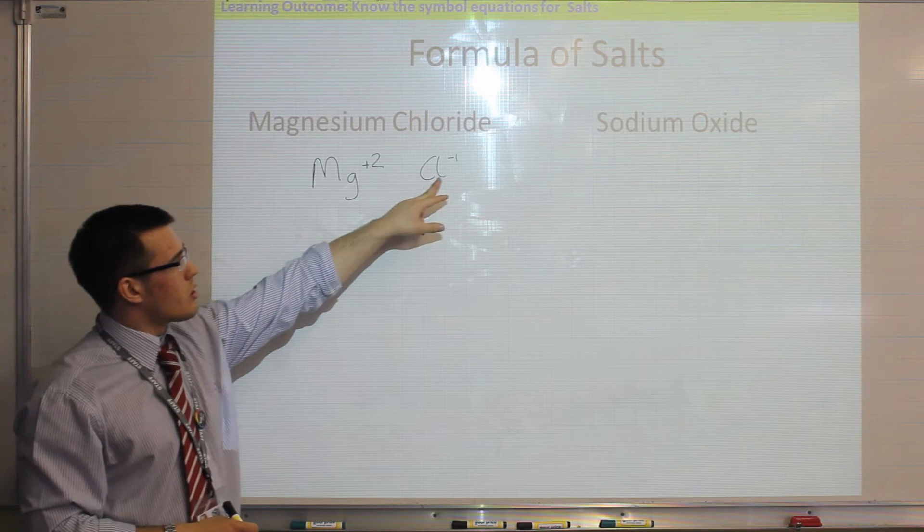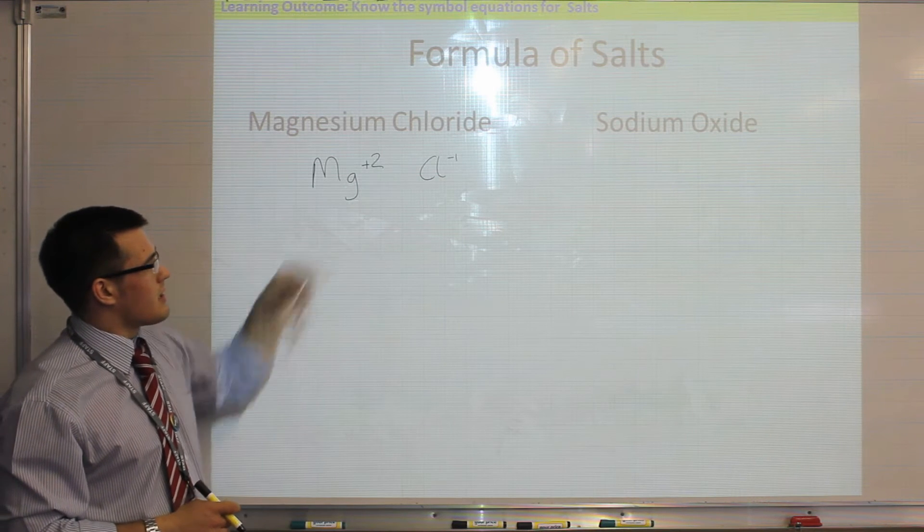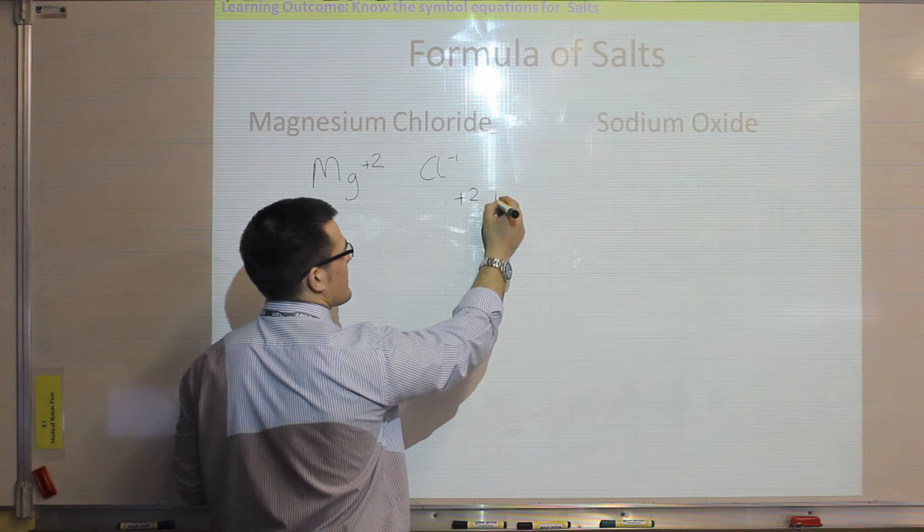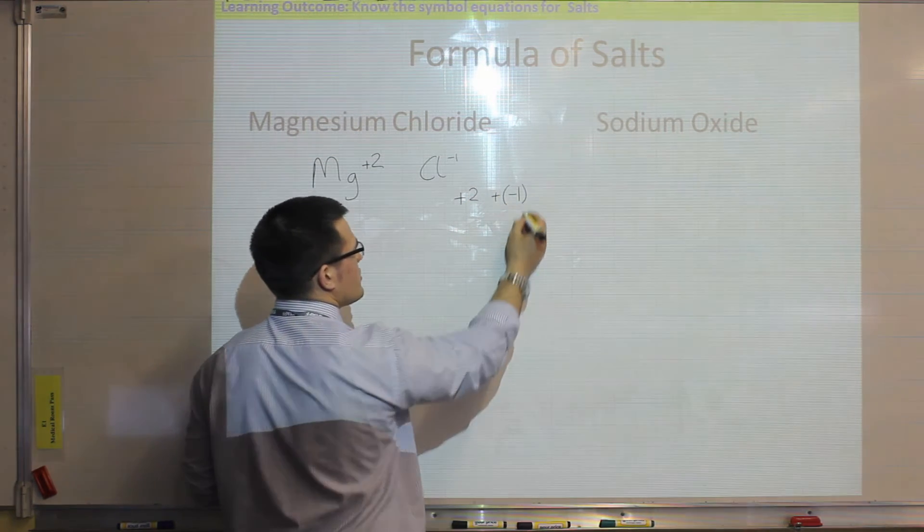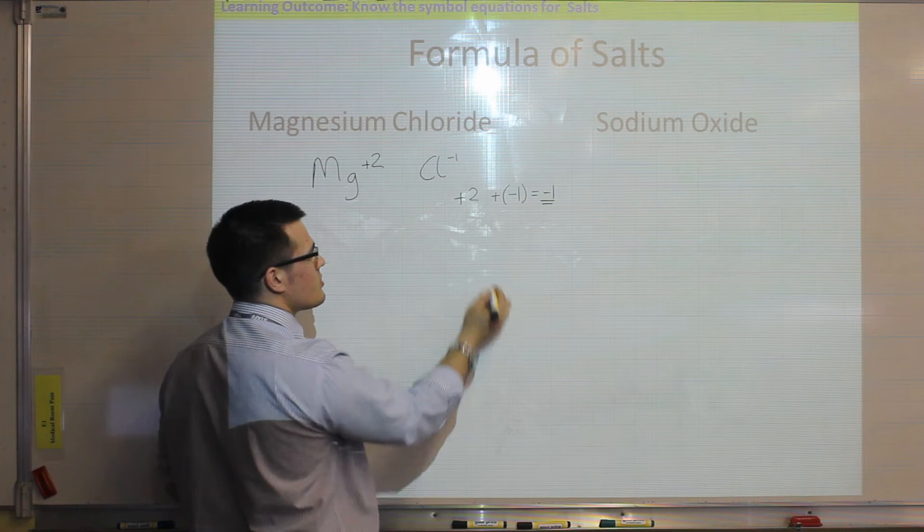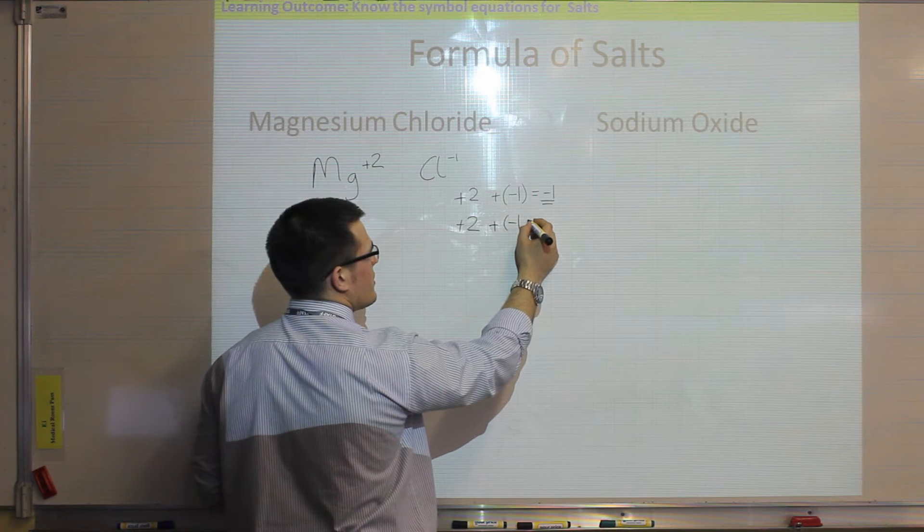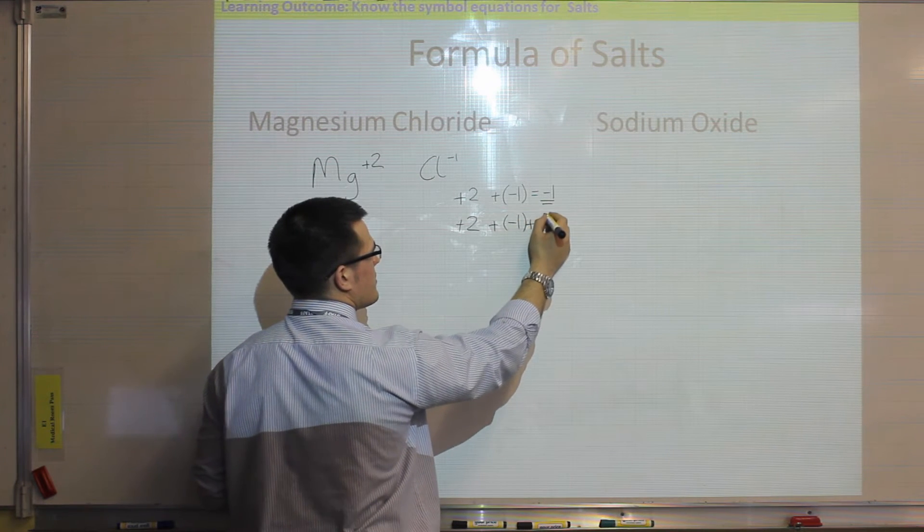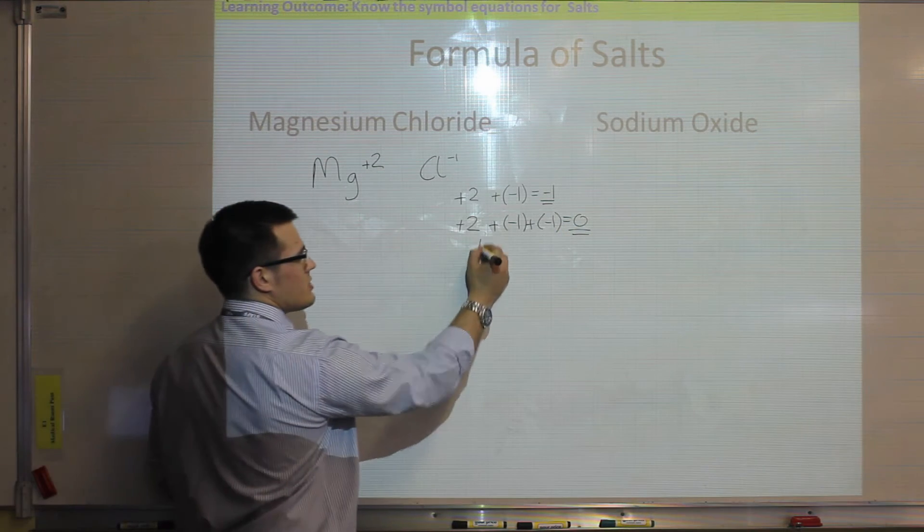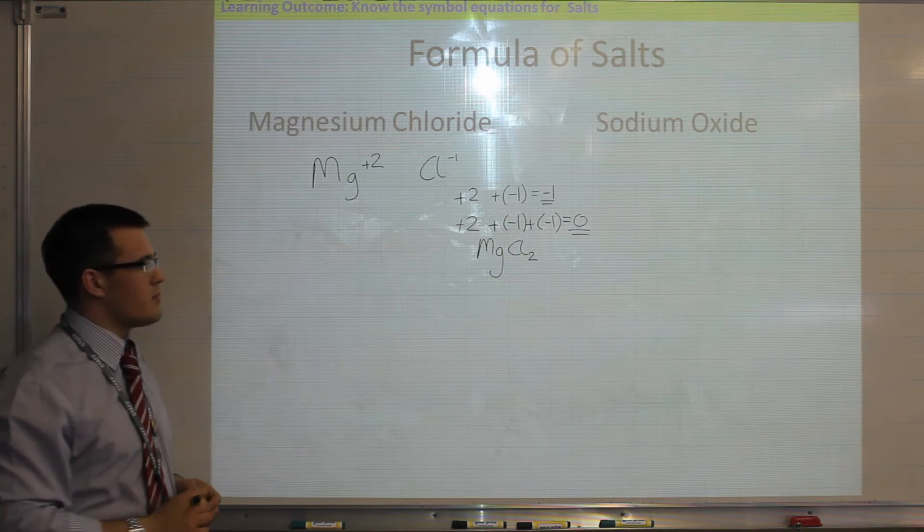So because magnesium is plus 2, and chlorine is minus 1, they have to balance, so I need two chlorine atoms to cancel that out. A way I could write that is I've got plus 2, and I can add that to my minus 1 charge, so that equals minus 1. That doesn't equal 0, so I have to add an additional chlorine, so that I've got two minus charges, so that it equals 0, so that they cancel out. So that would be one method to get my formula, which is MgCl2.